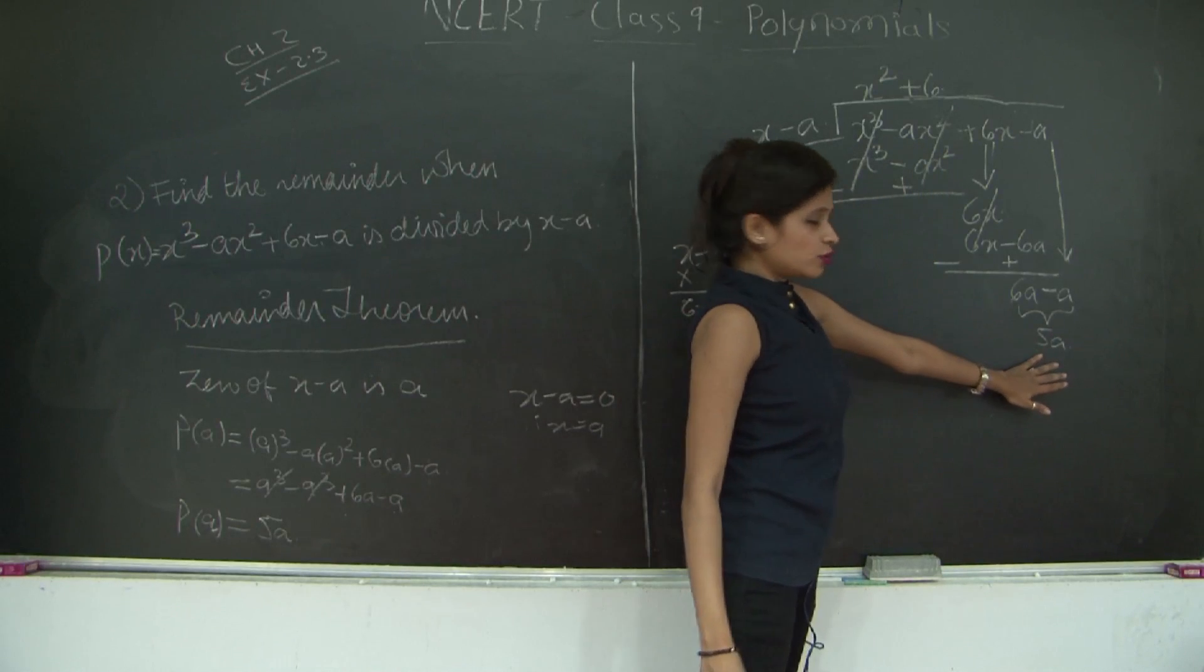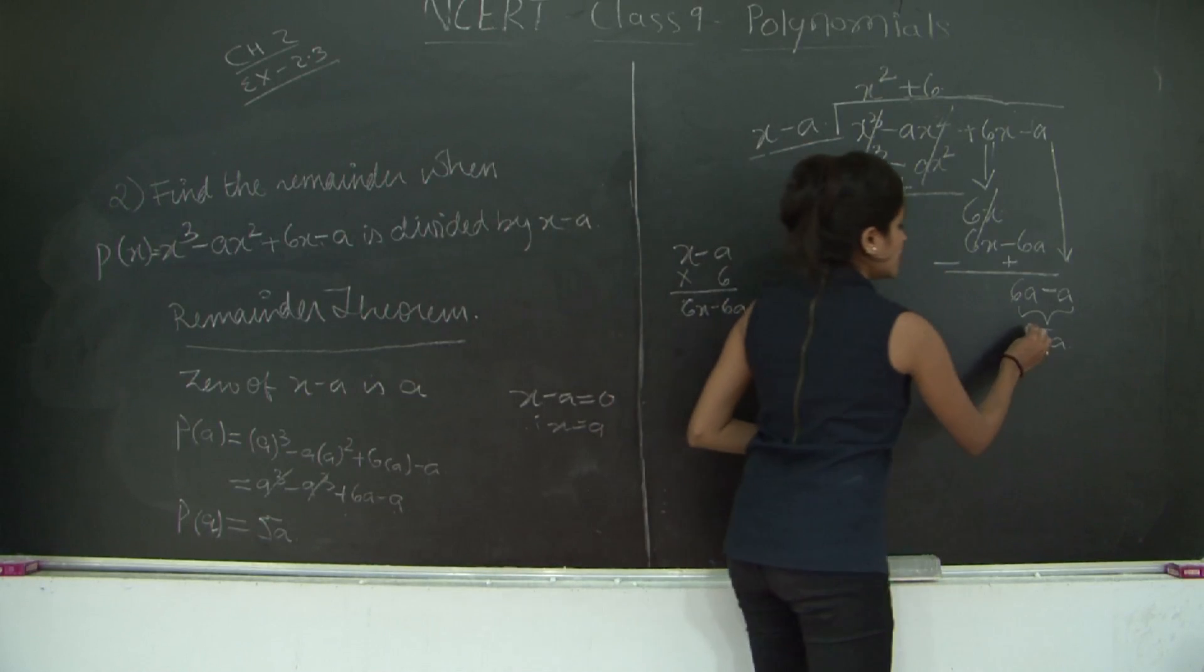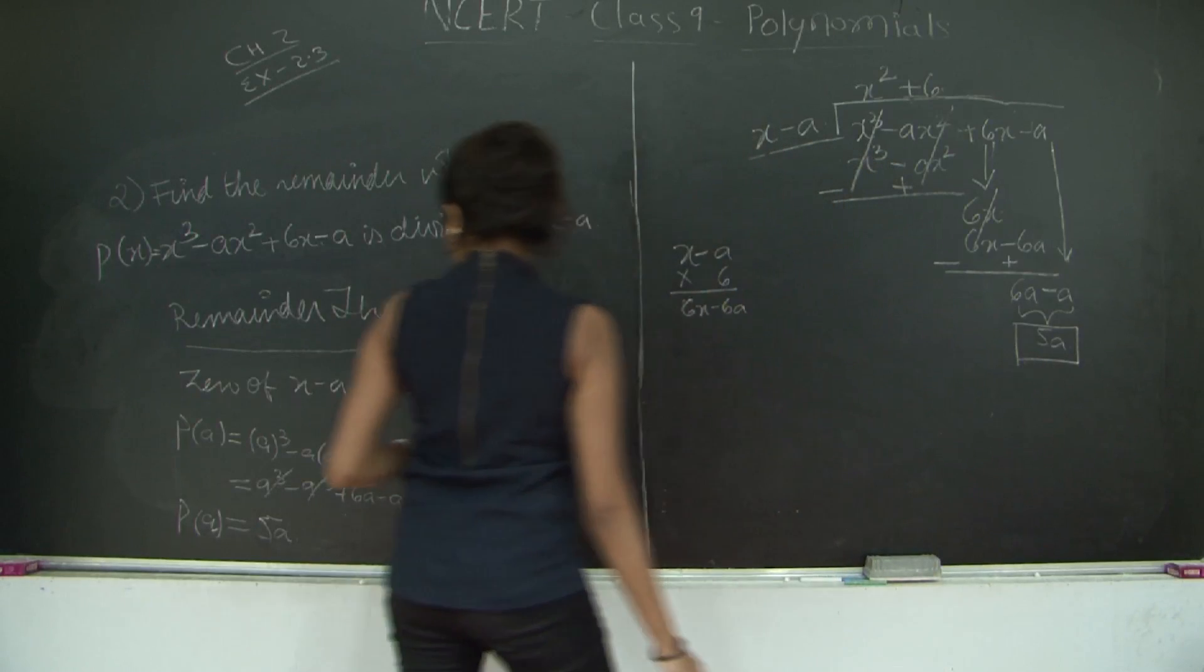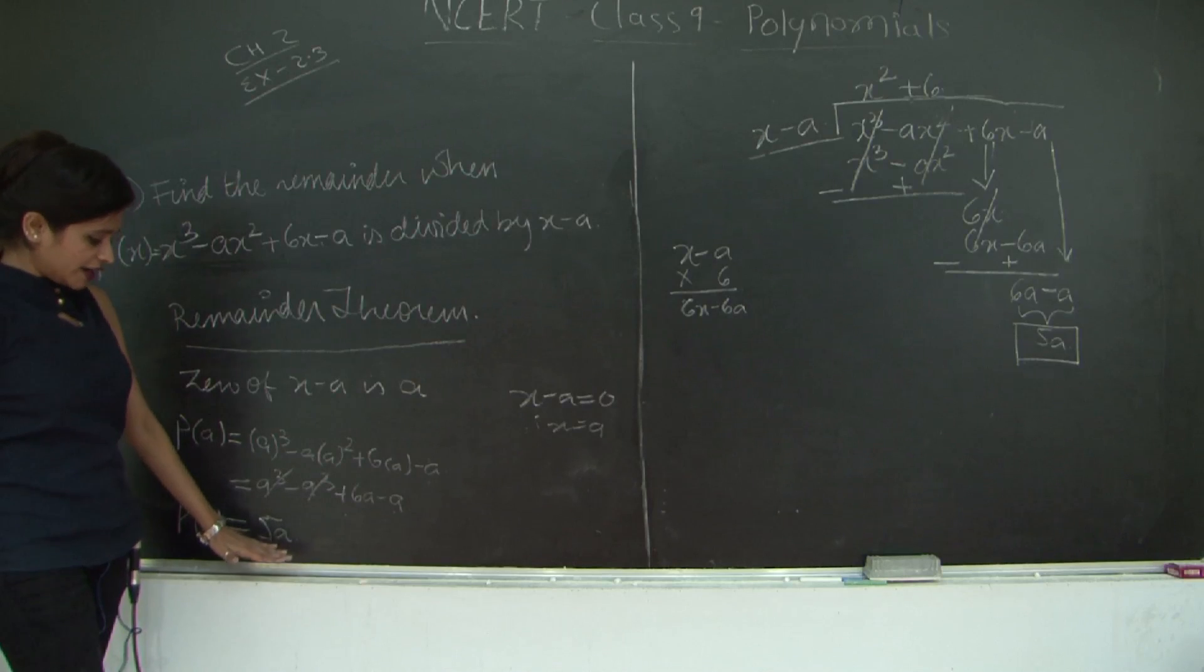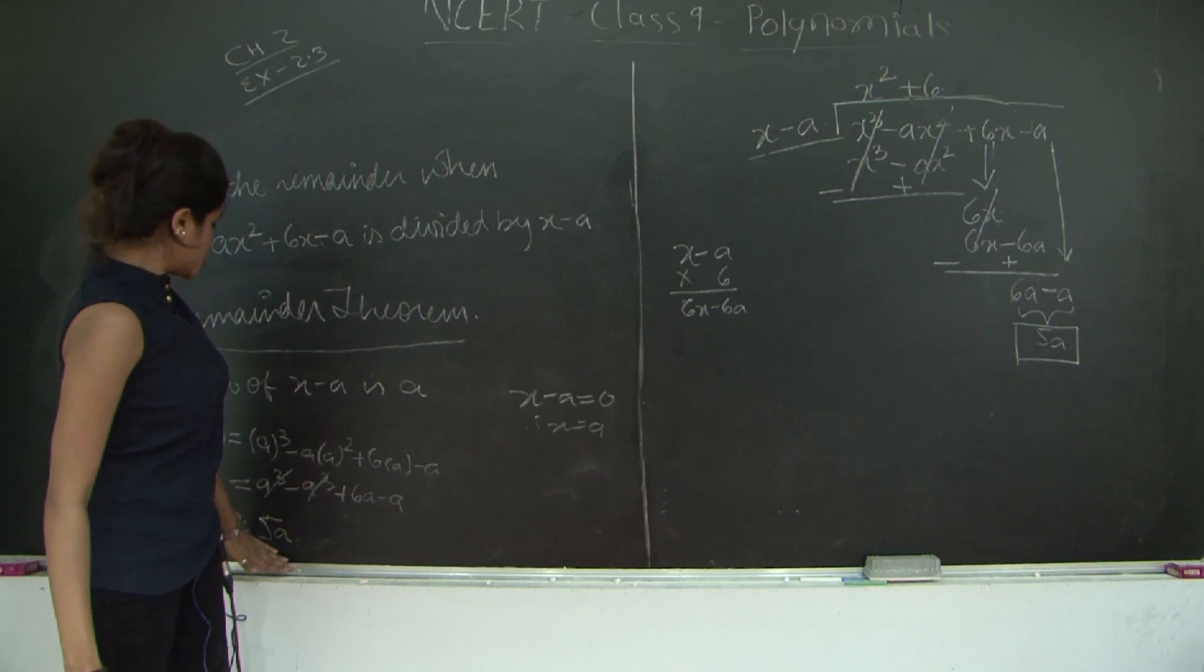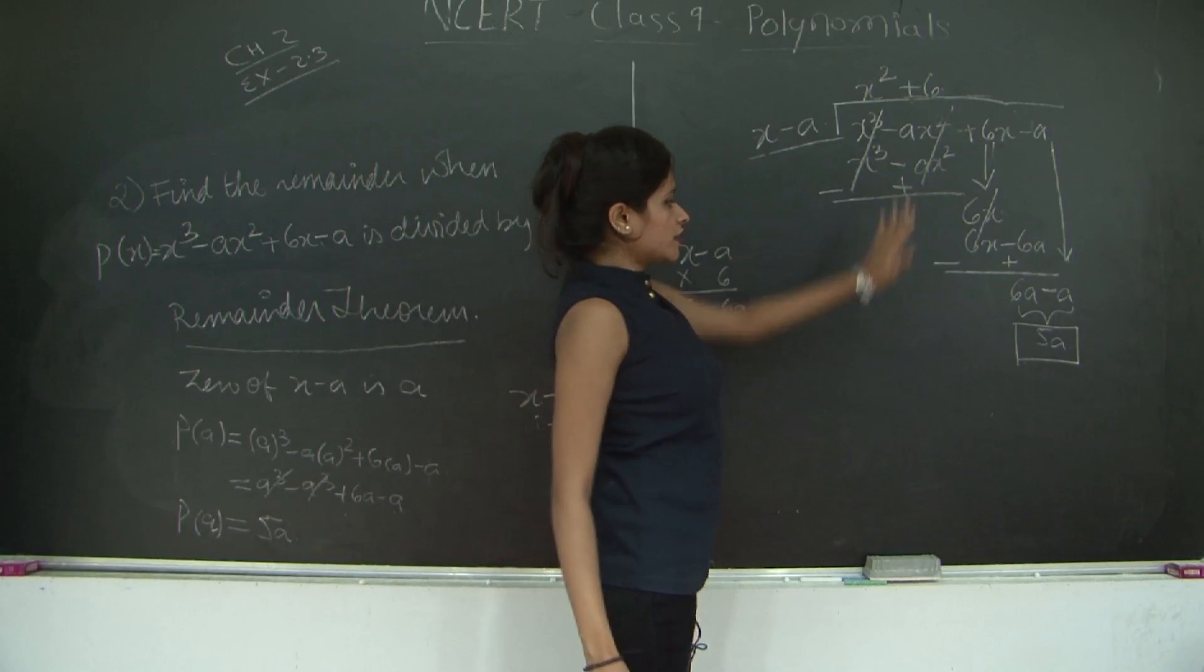Now x minus a into what will give me 5a? Clearly nothing. So my remainder is 5a. Let's compare the remainders. Yes, we have the remainder as 5a using the remainder theorem method as well as 5a using the long division method.